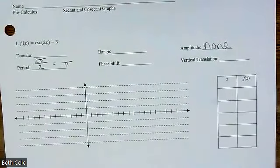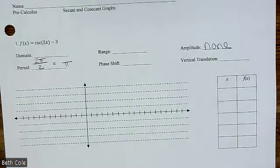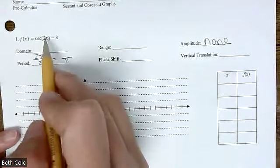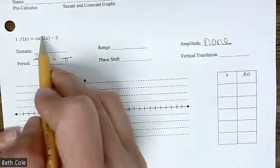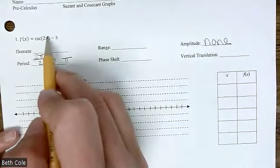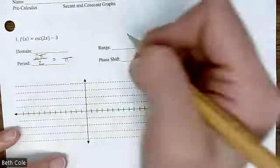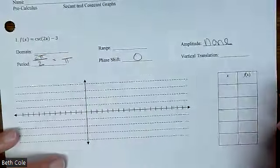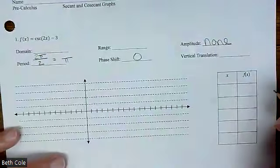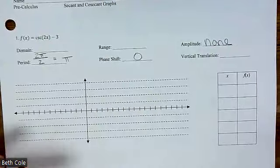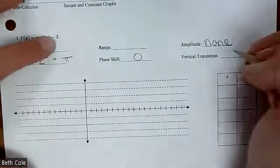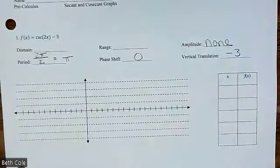So look, this is what happened: it was two pi, we condensed it, we squished it and shrunk it together — it's a horizontal shrink. So now it's just pi. Phase shift is left and right. Do you see anything added or subtracted in here? Nope, so zero or none. And then what's your vertical translation? Down three, or you can just say negative three.